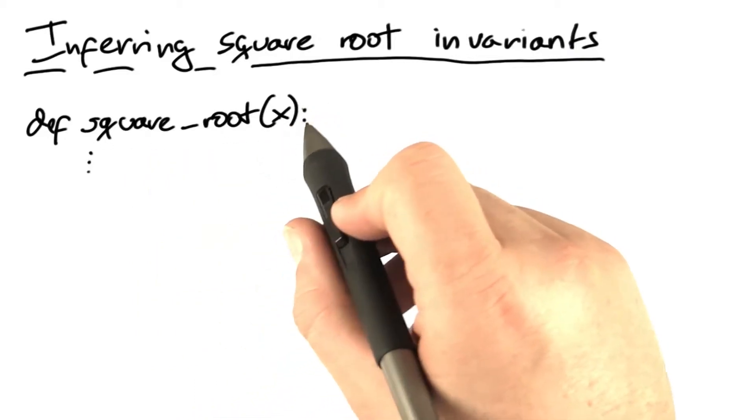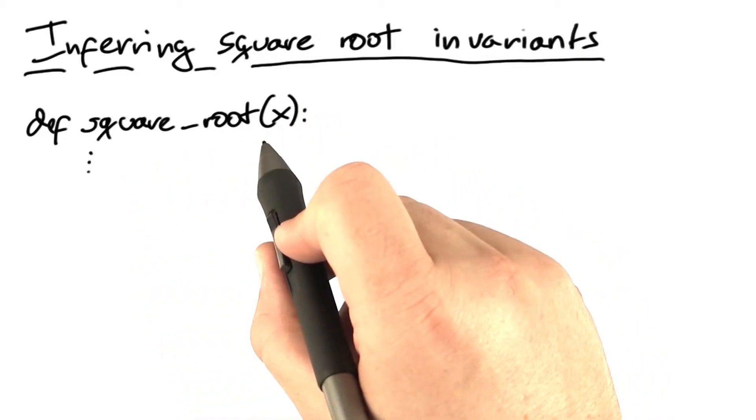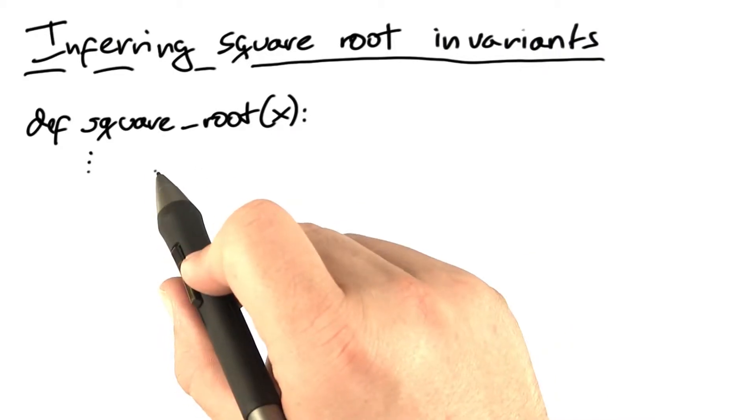Let me show you how this works on an example. Here's a square root function. Takes x, returns the square root.